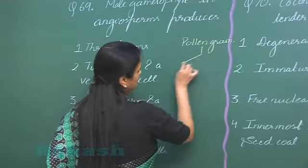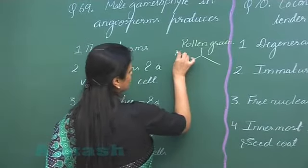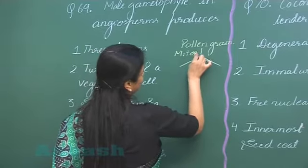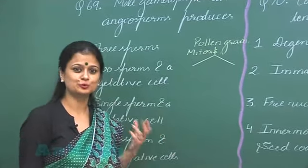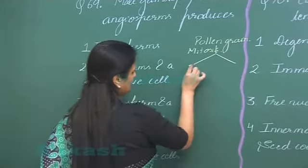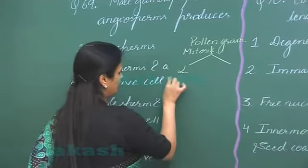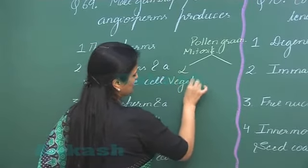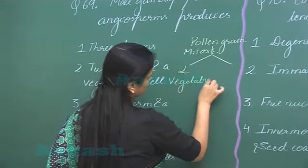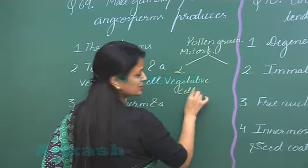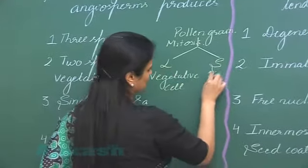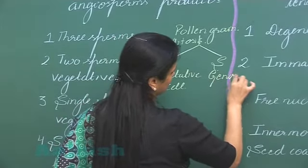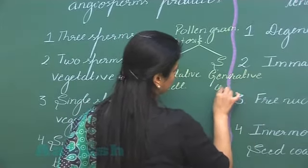Now this pollen grain shows mitosis. After the mitosis, there is formation of two cells. One is larger in size. I'm writing L for the larger one. This is known as vegetative cell or tube cell. The second one is smaller in size. This one is known as generative cell.